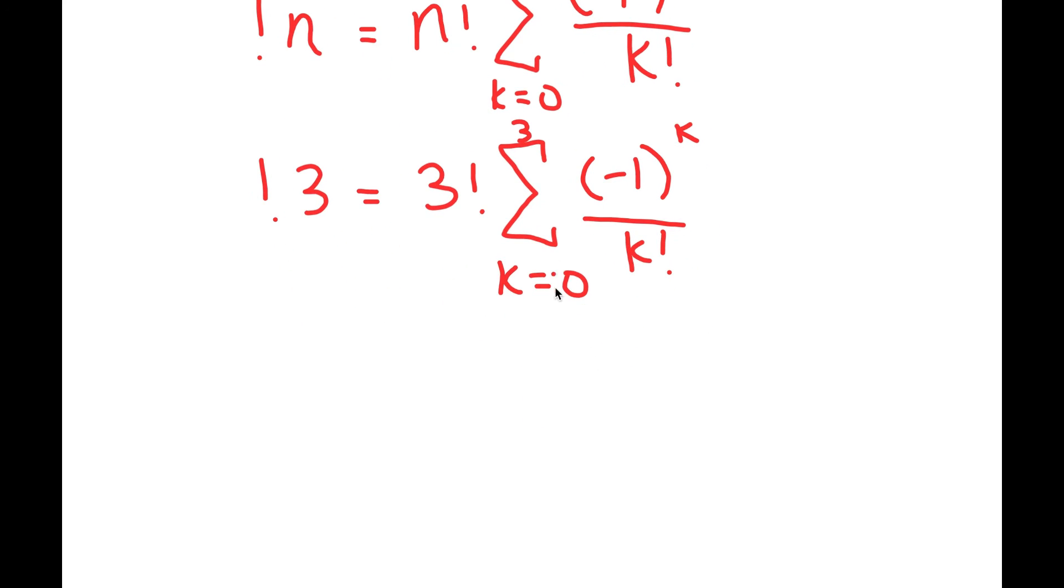And to solve this, we get three factorial times negative one to the power of zero over zero factorial because we start with zero. And then now k is going to turn into one because remember every repetition, we add one to k. So now k is going to be one.